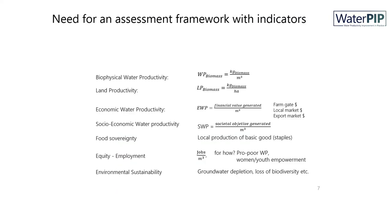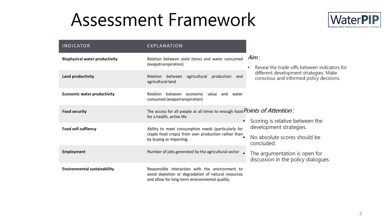This difference between the private and social value of water shows already that there are different indicators, and there might be trade-offs between indicators. But there are even more indicators, like land productivity, environmental sustainability, equity, but also food self-sufficiency. So we need an assessment framework to provide insight in the trade-offs between the different indicators. To make conscious and informed policy decisions, it's important to reveal the trade-offs between indicators for different development strategies. Here you see a set of indicators with the explanations, which you could add to the assessment framework. It's also important to mention that the scoring is relative between the different development strategies, and the argumentation is open for discussions in policy dialogues.